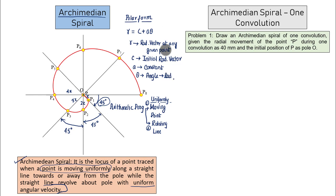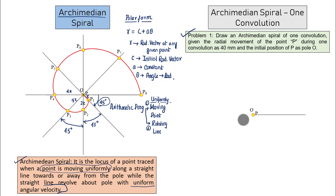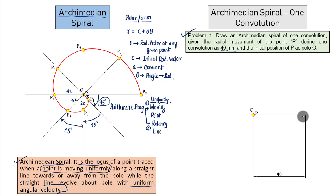Now let's take an example and understand the construction process for making an Archimedean spiral for one convolution. The problem reads: draw an Archimedean spiral of one convolution given the radial movement of point P during one convolution as 40 millimeters, and the initial position of P as the pole O. So point P initially coincides with the pole, and this length has to be taken as 40 millimeters.